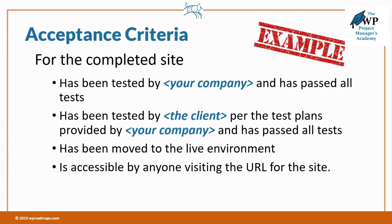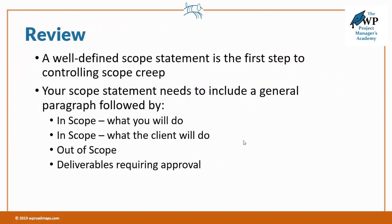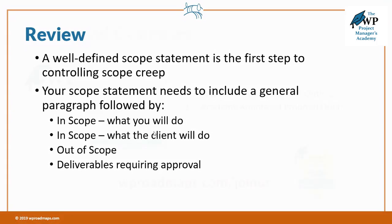Let's do a quick review. A well-defined scope statement is the very first step to controlling scope creep. Within the Project Managers Academy, we've got the scope creep elimination roadmap, which is super helpful. Your scope statement needs to include a general paragraph, what's in scope that you will do, what's in scope that the client will do, and what is out of scope for the project as a whole, plus your deliverables that require client approval with a description. For more information, it's all inside the WP Project Managers Academy.